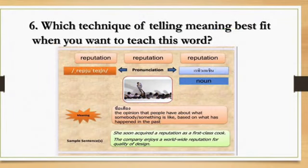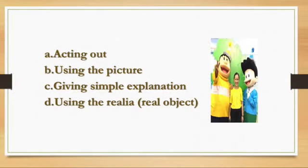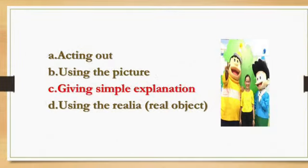Number 6. What about the word 'reputation,' meaning the opinion that people have about what somebody or something is like? It is hard to act out reputation or use a picture, because it is an abstract noun — you cannot touch it. So the correct answer is to explain with simple explanation.